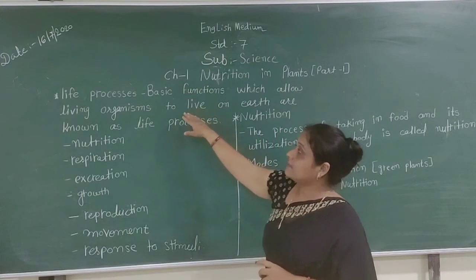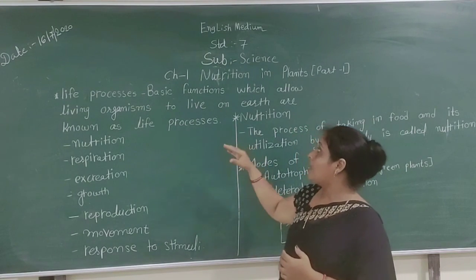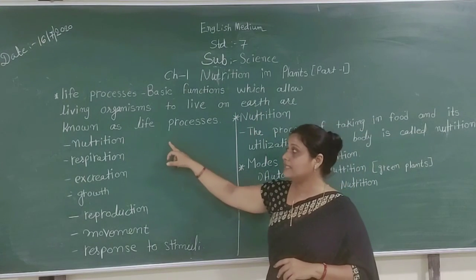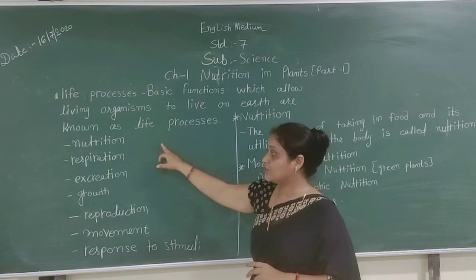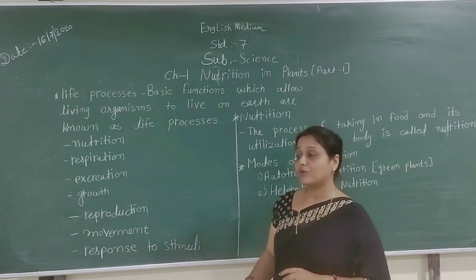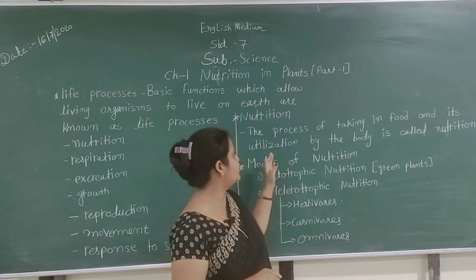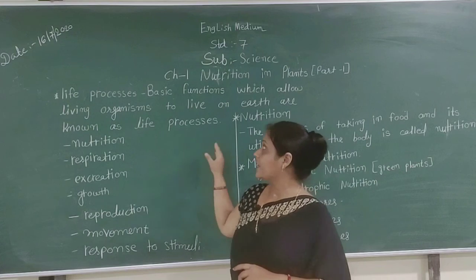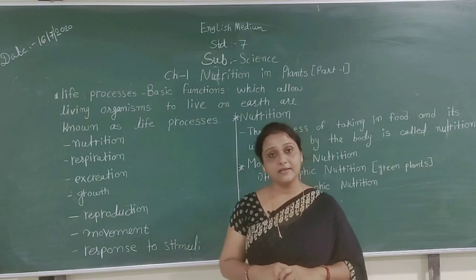To recap: life processes are the basic functions which help us to stay and live on earth. These include nutrition, respiration, excretion, growth, reproduction, movement, and response to stimuli. Nutrition, which is very useful to us, has two modes: autotrophic and heterotrophic. This topic is now complete and we will meet in our next topic.